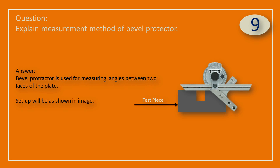Bevel protractor is used for measuring angles between two faces of a plate. The setup will be as shown in the image.